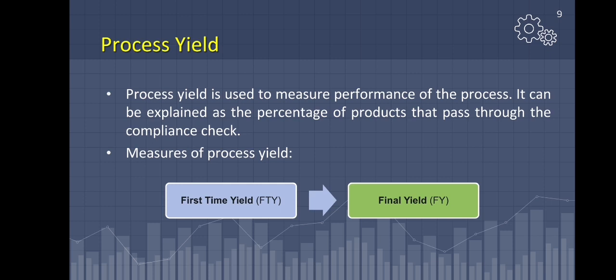First time yield (FTY) can be obtained by dividing the good product units by the number of total units entered the process at a given process step. Final yield can be obtained by counting the good units that made it through until the last step divided by the total number of units that entered the process.